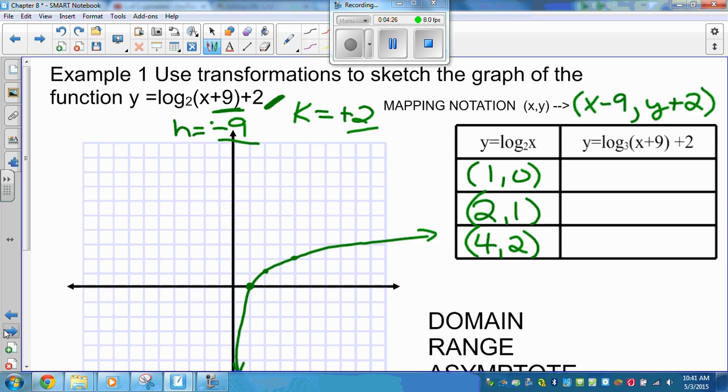So I take my X value of 1, I subtract 9, and I get negative 8. I do this in another color. I take my Y value of 0, and I add 2 to it. So negative 8 and 2. So here I have negative 1, 2, 3, 4, positive 2, negative 8, positive 2. There's a point right there. So I'm taking this graph, I'm shifting it over, and then I'm shifting it up.